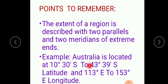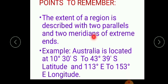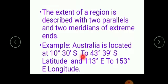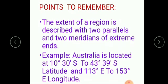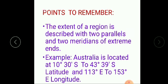To summarize: parallels mean latitude, meridians mean longitude — one and the same thing. To express the extent of a large region, take help of two parallels and two meridians. To describe the location of a single place, you always consider one parallel and one meridian.